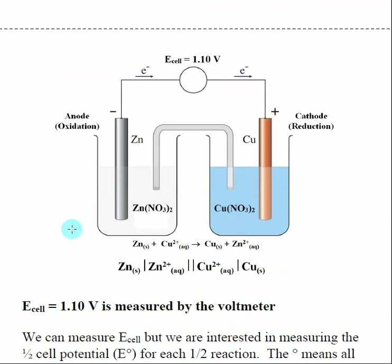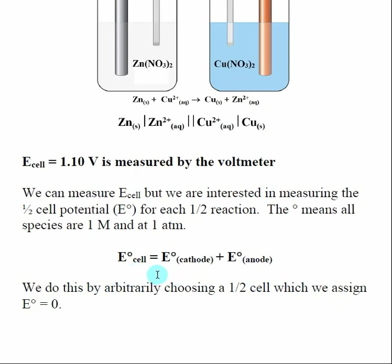Now we can start talking about the E-cell for this reaction. I have my two half reactions connected with a wire, a voltmeter hooked up, and a salt bridge. For this electrochemical cell, this is the cell diagram, and what we're leading into is a discussion of the two half-cell potentials — how well zinc gives up two electrons, and how well copper gains two electrons — and how those together make the overall E-cell. The equation is: E°cell = E°cathode + E°anode.